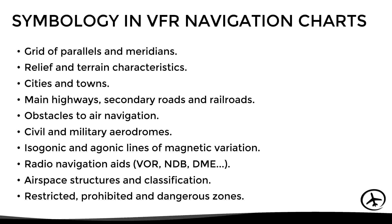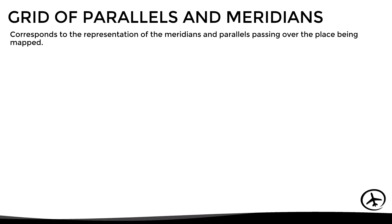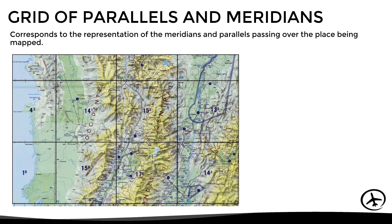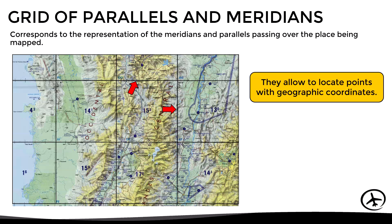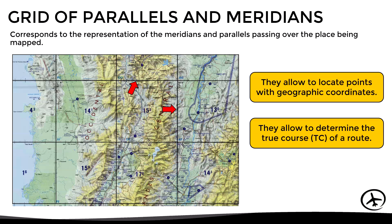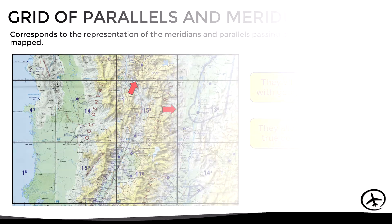Let's look at each of these elements in more detail. Starting with the grid of parallels and meridians — this corresponds to the representation of the meridians and parallels passing over the place being mapped, shown as black lines. They are useful for locating points using geographic coordinates and are also used to determine the true course of a route using a plotter.